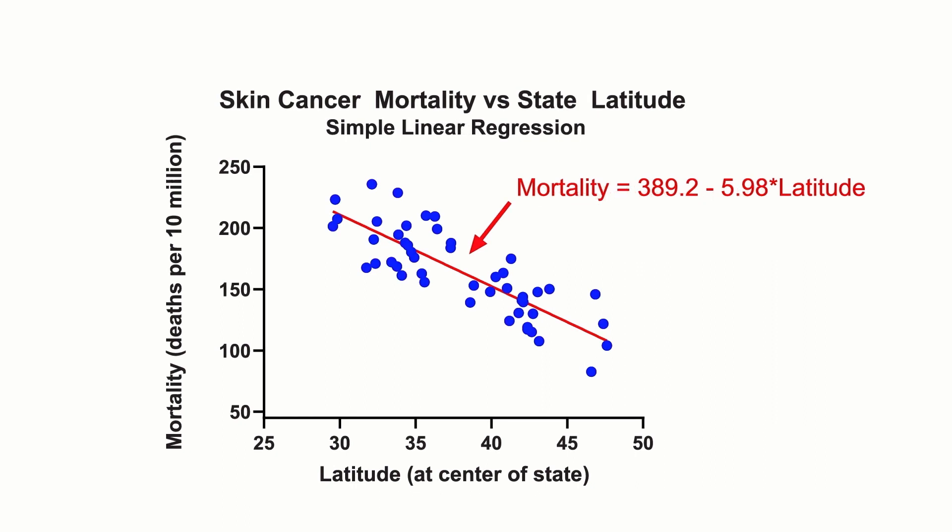With regression, an equation indicated by the red line also shows a negative relationship, but additionally allows for the prediction of skin cancer rates at different latitudes. The slope indicates every one degree increase in latitude decreases mortality by 5.98 deaths per 10 million individuals. The intercept predicts a mortality rate at a latitude of zero — at the equator — of 389.2 deaths per 10 million individuals. Although, since there are no data at a latitude of zero, this prediction relies heavily on the relationship maintaining its linear form outside the range of the data.